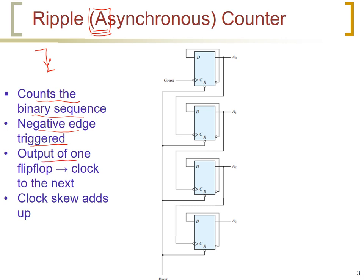The output of one flip-flop is used as the clock input of the next flip-flop. We describe this using a 4-bit binary counter, which needs 4 flip-flops called A0, A1, A2, and A3. In these flip-flops, the D input of each flip-flop is the complement of its output: A0' inputs to D0, A1' to D1, A2' to D2, and A3' to D3. All flip-flops also receive a common reset signal that clears them when it is 0.